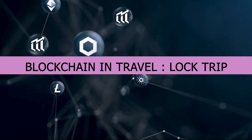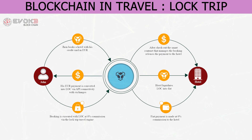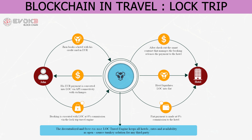Blockchain in travel — Locktrip. It is a blockchain-powered marketplace where property owners can rent their property globally, collect money, and manage bookings without paying any commission to middlemen. Blockchain in the travel industry has also revolutionized hotel booking and payment by not giving any commission to hotels or third-party vendors. The blockchain would be a decentralized system, free to use, thus cutting costs and additional overheads.